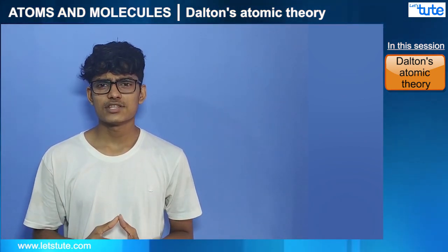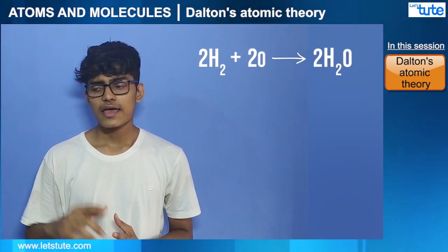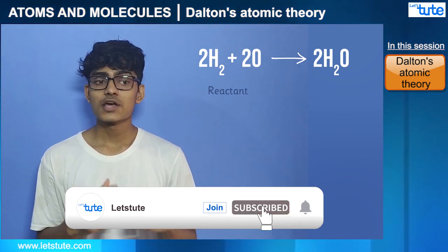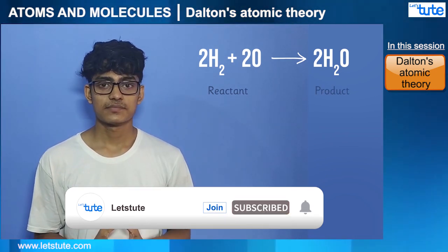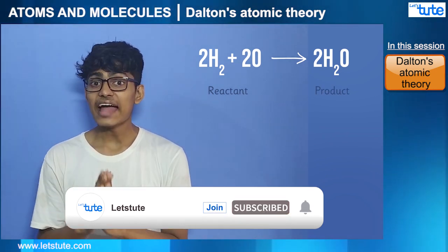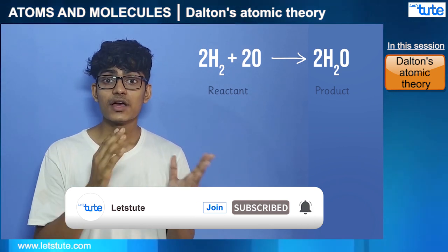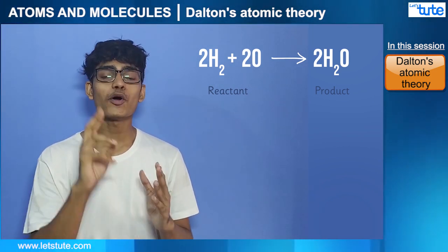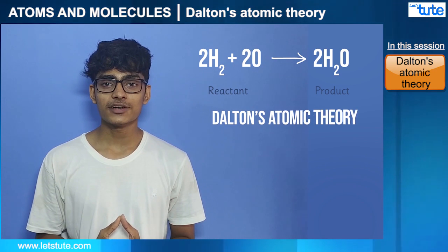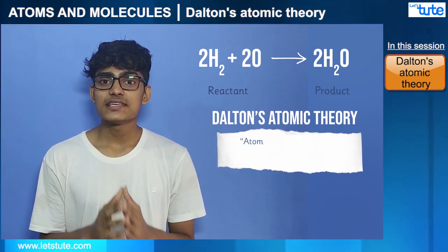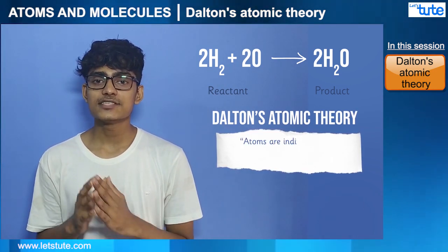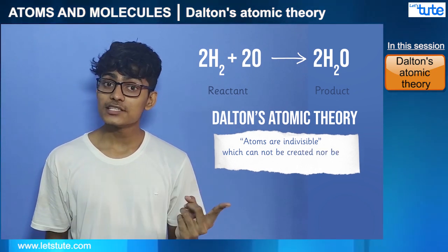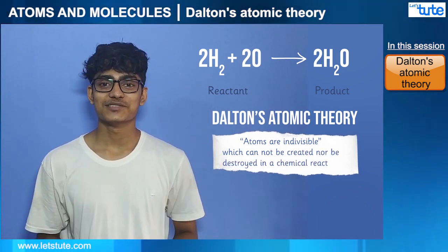Let's take the chemical reaction again. Everything on the reactant side is used to make the products — atoms are not created nor destroyed. This is the second point of atomic theory: atoms are indivisible and cannot be created nor be destroyed in a chemical reaction.